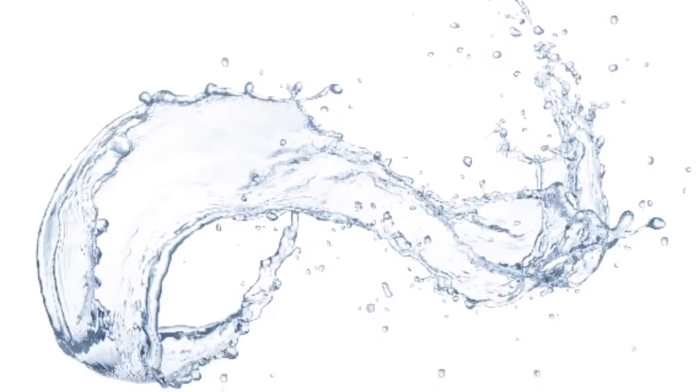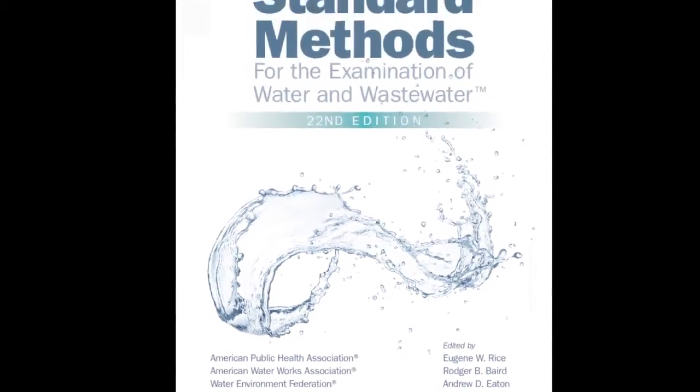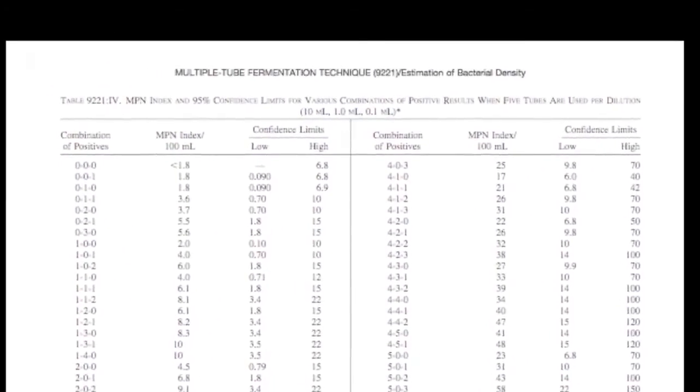Using the combination of positive wells, the most probable number of bacteria per 100 milliliter sample can be read directly from standard methods table 9221D or from the MPN table in the product insert.